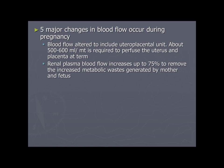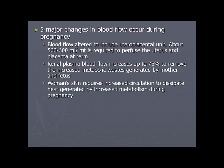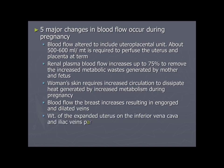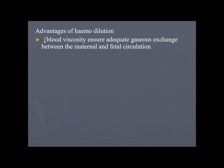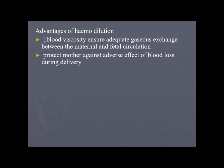Women's skin requires increased circulation to dissipate heat generated by increased metabolism. Blood flow to the breast increases, resulting in engorged and dilated veins. The weight of the expanded uterus on the inferior vena cava and iliac veins partially obstructs blood return from the legs, causing stasis and venous distension. Advantages of hemodilution: decreased blood viscosity ensures adequate gas exchange between maternal and fetal circulation and protects the mother against adverse effects of blood loss during delivery.